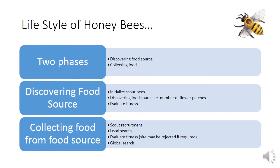The second phase is collecting food from food sources. Here scout bees are recruited for each food source based on the fitness function. Then those bees will collect the food. They also do a local search for new flower patches. All the above processes are then repeated continuously.